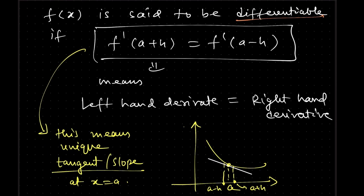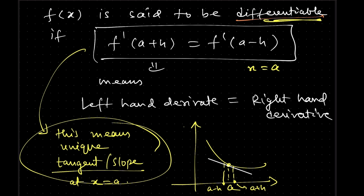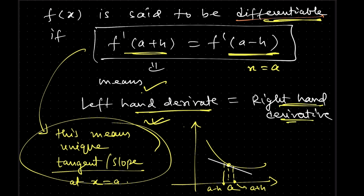Now let's see what a differentiable function is. Any function is said to be differentiable at a point if f dash (a plus h) is equal to f dash (a minus h), which means the left-hand derivative should be equal to the right-hand derivative, or equivalently the left-hand tangent is equal to the right-hand tangent. You should always get a unique tangent at a differentiable point.